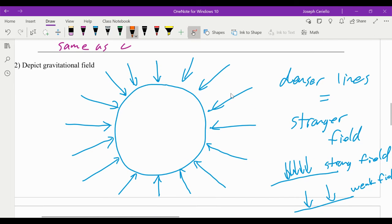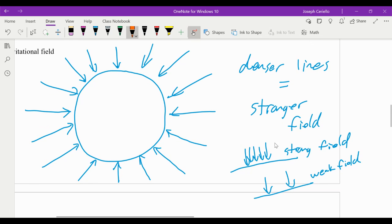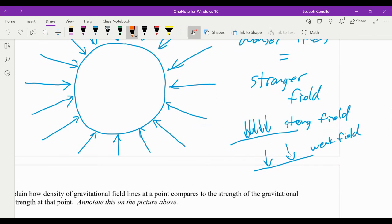Basically, all you have to know about gravitational fields is that in order to represent them, you just draw arrows in the direction that an object with mass would go. In this case, if this were the Earth, let's say, or the Sun, or any object with mass, the gravitational field lines would point straight at it, towards its center. They wouldn't go inside, though. And it's important to know that the denser the field lines are, the stronger the field. So if there's a lot of gravitational field lines, it is stronger than if there were fewer.